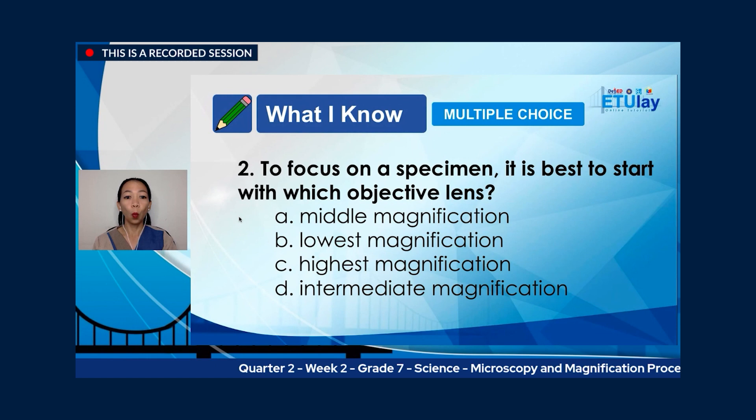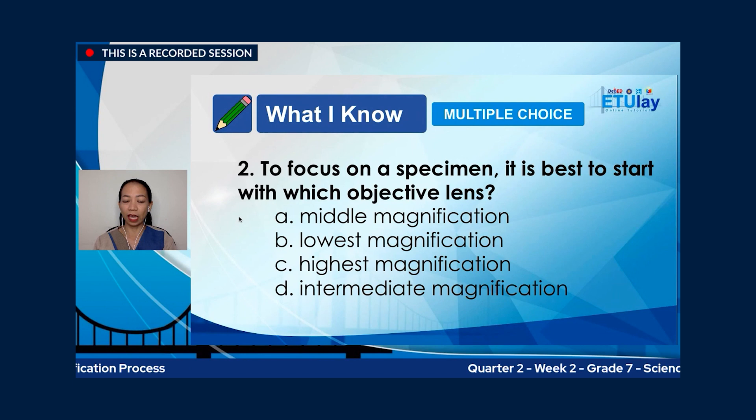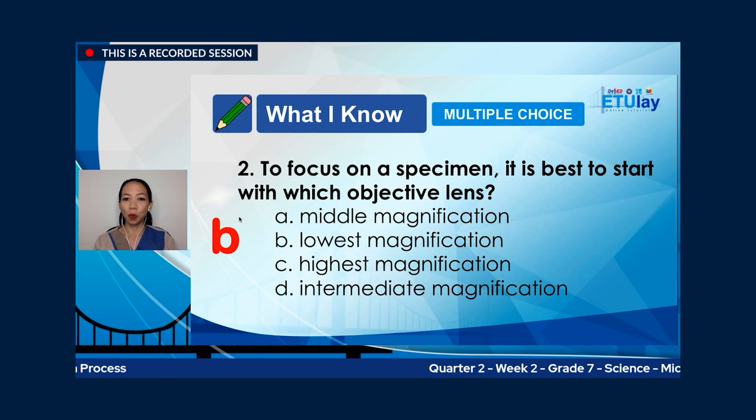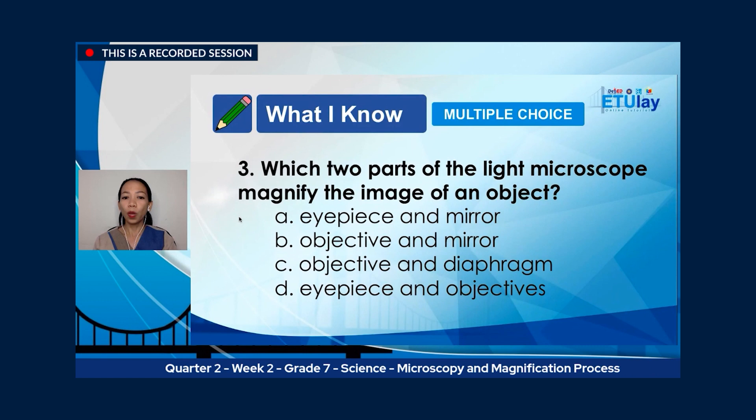Number two: to focus on a specimen, it is best to start with which objective lens? A, middle magnification; B, lowest magnification; C, highest magnification; or D, intermediate magnification? The correct answer is letter B, lowest magnification. Remember to always begin with the lowest magnification.